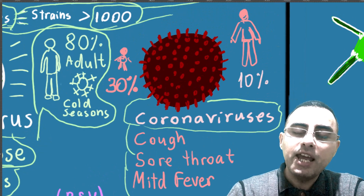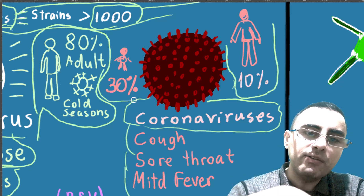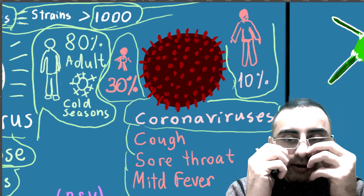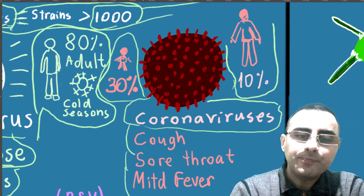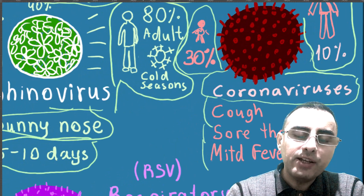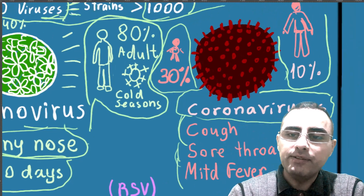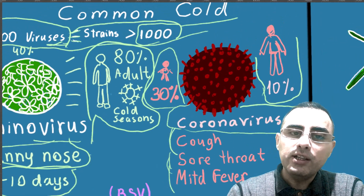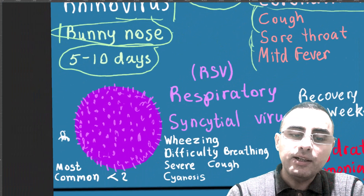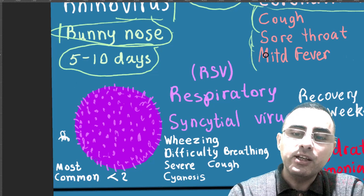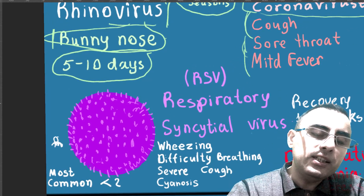The main symptoms in the case of coronaviruses are cough, sore throat, and mild fever. Coronaviruses are present in 10% of cases among adults and 30% of cases among children. So coronaviruses are also a very common causative agent of the common cold. Unlike rhinovirus where the main symptom was runny nose, here the main symptoms are cough, sore throat, and sometimes mild fever. This common cold resolves without treatment in several days, sometimes up to two weeks.